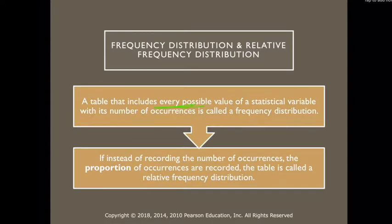But a little refresher: instead of recording the number of occurrences, I could record the proportion of occurrences. And that would be called a relative frequency distribution, because it's relative to all the other frequencies. So why don't I go ahead and calculate one of those for us? That way we're all on the same page.